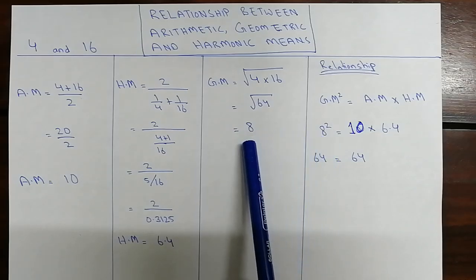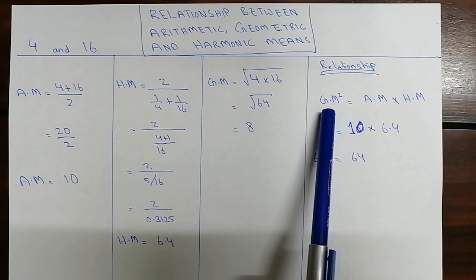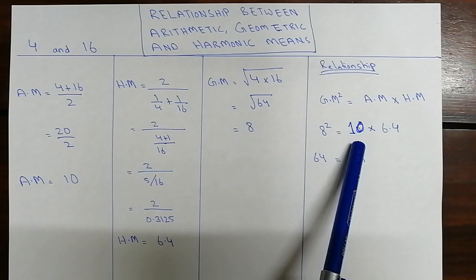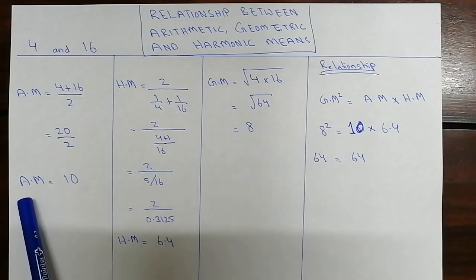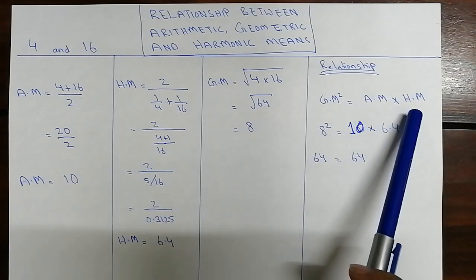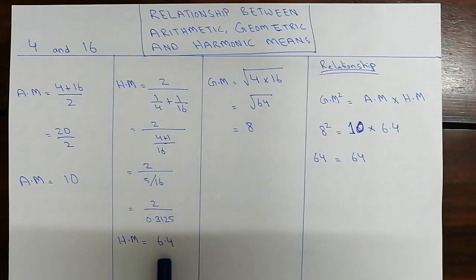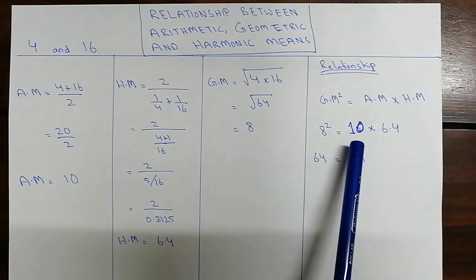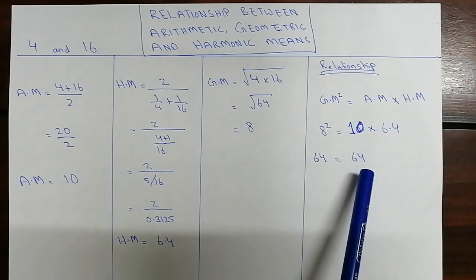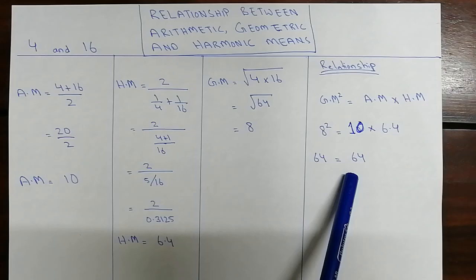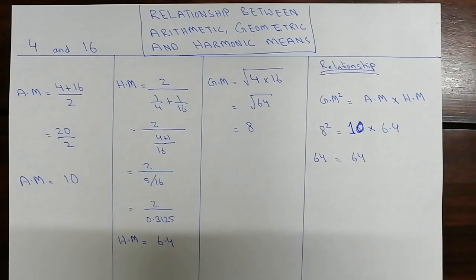The geometric mean is 8, so the square of the geometric mean is 8² = 64. The arithmetic mean is 10 and the harmonic mean is 6.4, so 10 × 6.4 = 64. Since 64 = 64, we have proved the relationship. Thank you for watching this video.